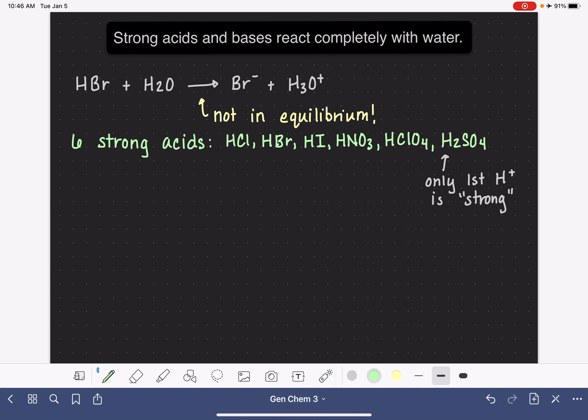Now, I said that depending on which source you're using, there might be seven. So if you're using a different resource, it might list HClO3 as another one of the strong acids. HClO3 is kind of right on the fence of being a strong acid or a weak acid. So some people include it as a strong acid, and some do not.